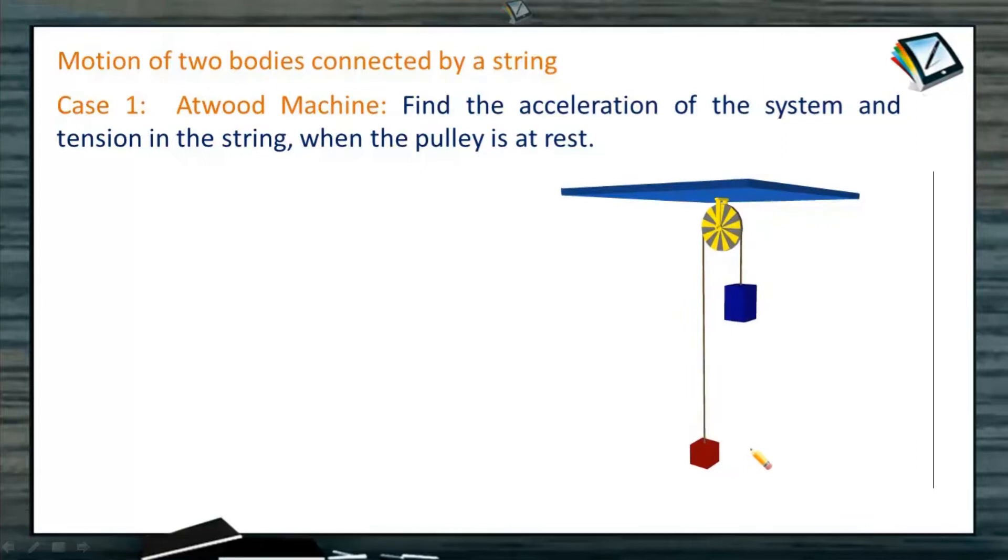Blue colored body is heavy, so it starts sliding down. There is a pulley system attached here, fixed to the rigid support. It is called an Atwood machine. We will try to calculate the acceleration of the mass M1 and M2 when this pulley system is at rest, that means the rigid support is not moving.